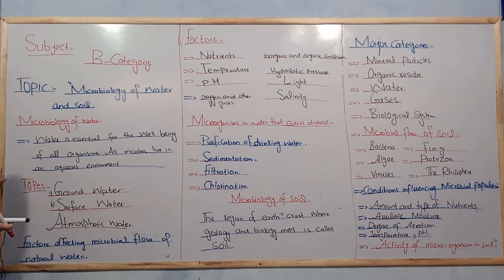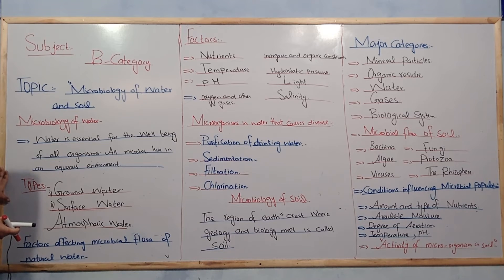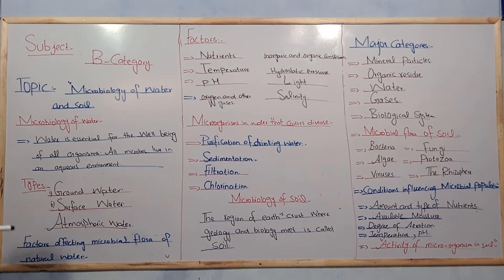If we discuss further, there are some major types in the Microbiology of Water. We can distribute it into three types: first is ground water, second is surface water, and third is atmospheric water.